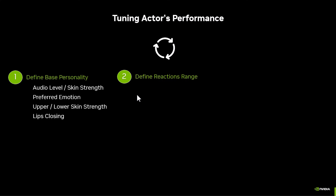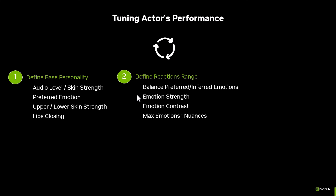Once that's done, you define how much your character can react — is he going to change emotion abruptly or stay in personality? You need to define the balance between what's inferred versus what's preferred, how strong those emotions are, and if there's a lot of contrast between them. You also set the number of emotions you allow your character to have at the same time — if he's jumping from very smiley to very angry very quickly, you reduce the number of emotions allowed.